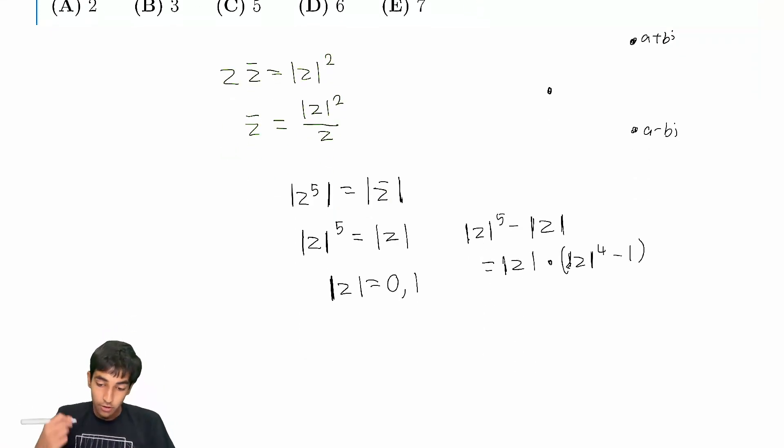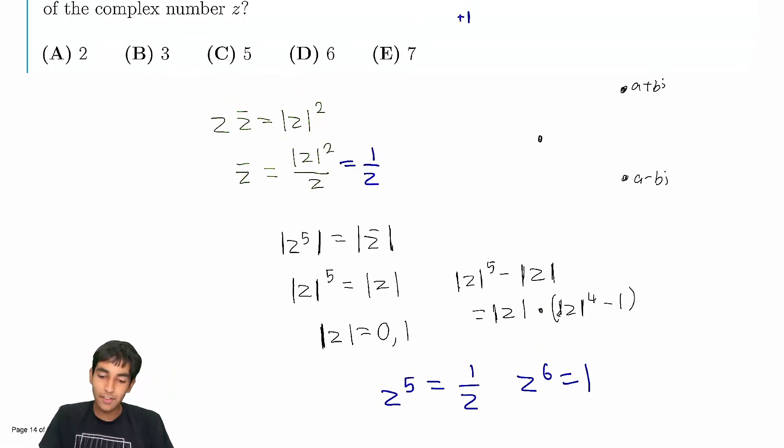Now, what if magnitude is 1? Then, we can just substitute 1 over z. We have z to the 5 is 1 over z. So, z to the 6 is 1. And our solutions are just the 6th roots of unity, giving us 6 possibilities.